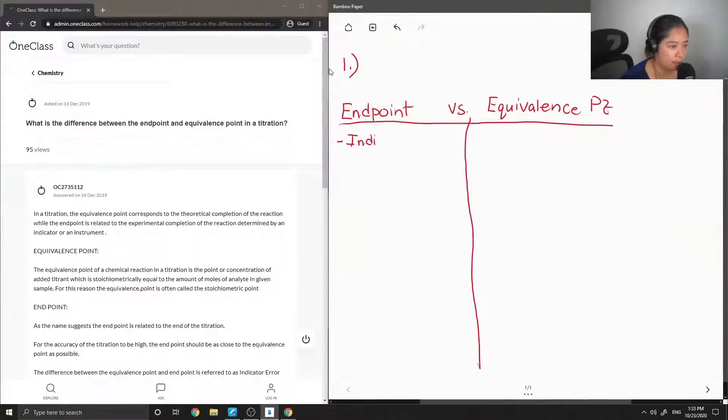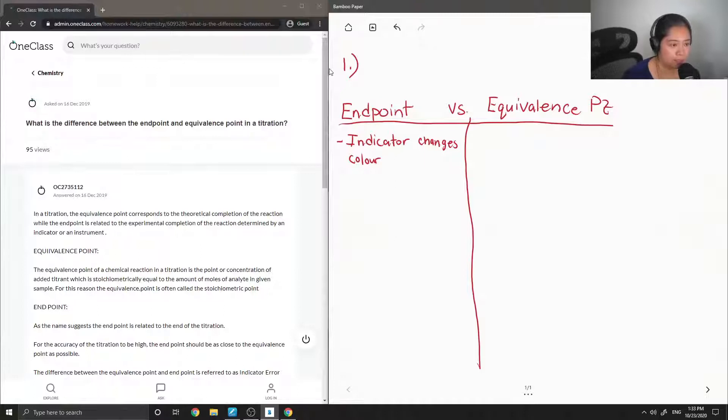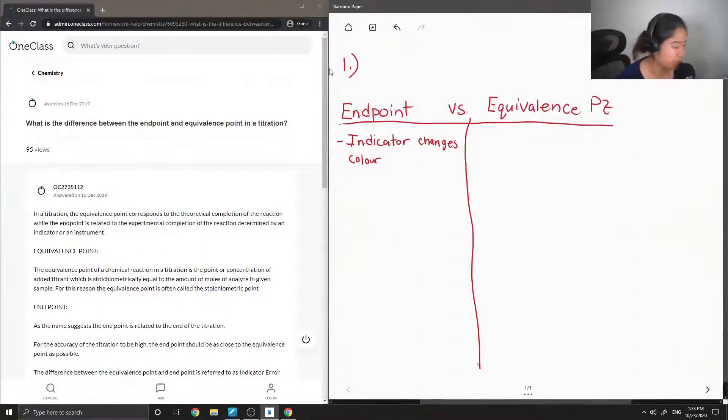The endpoint is when your indicator changes color. And that's if you have a color changing indicator. There are other indicators such as voltage, but commonly the indicators tend to change color, so I'm just going to write that down.